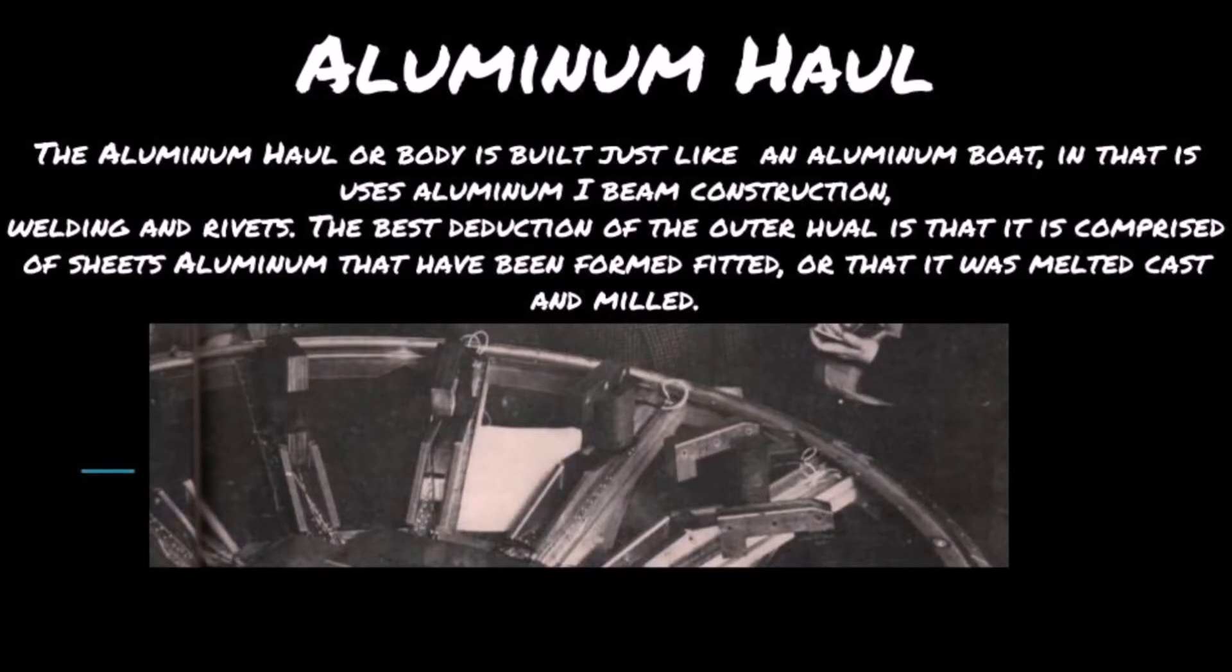Aluminum hull: The aluminum hull or body is built just like an aluminum boat in that it uses I-beam construction, welding, and rivets. The best deduction of this outer hull is that it is comprised of sheets of aluminum that have been form-fitted, or that it is melted, cast, and milled.